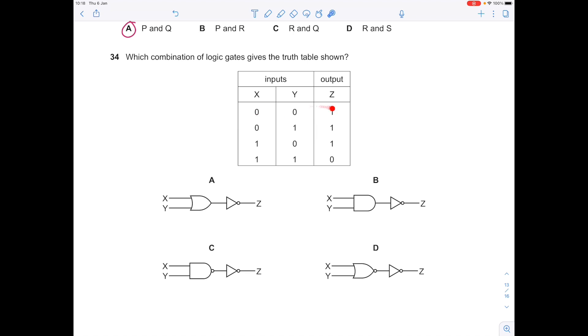However, what about if X is 0 according to this bit of the table and Y is 1? Then our output from the OR gate will be 1 and the output from the NOT gate would be 0 as opposed to 1. So the second line is wrong, which is why A is not correct.